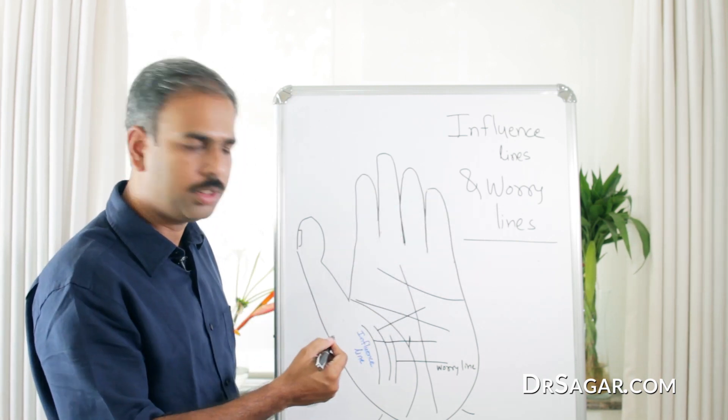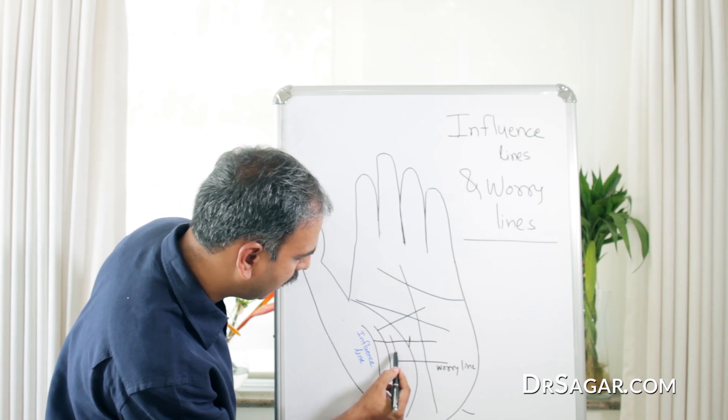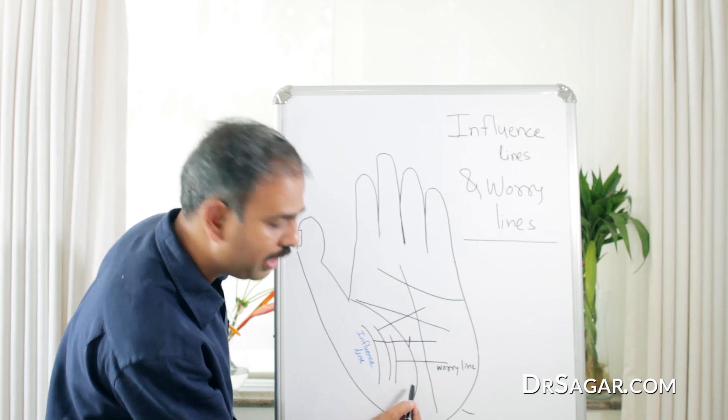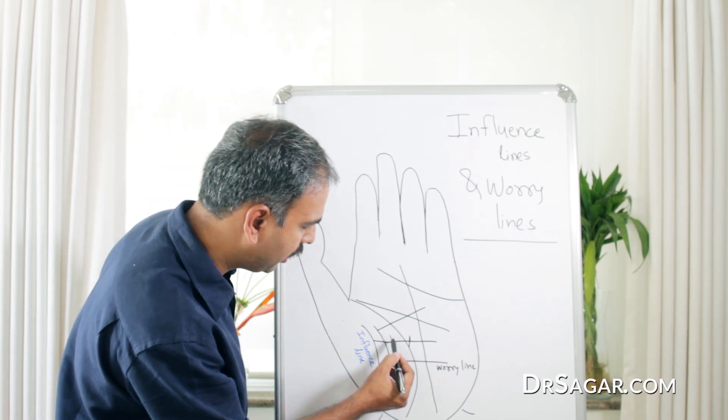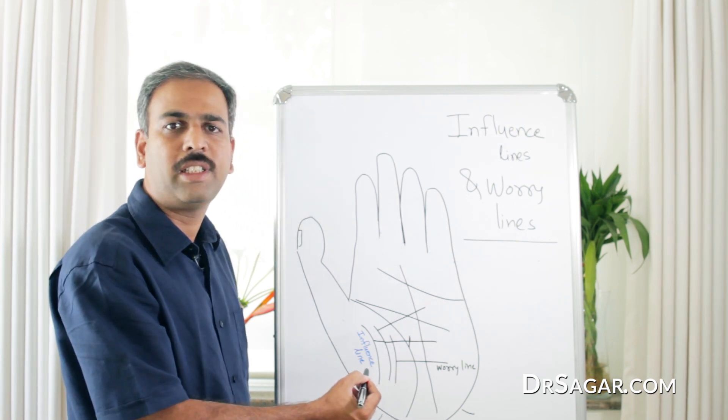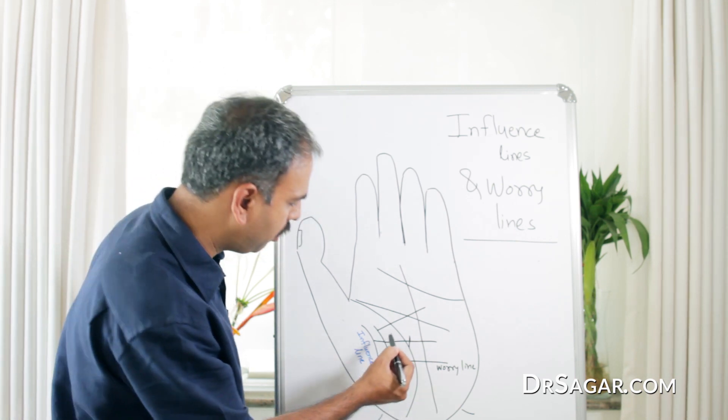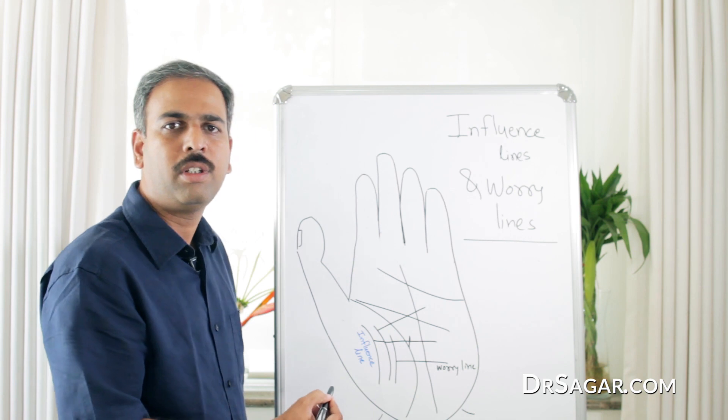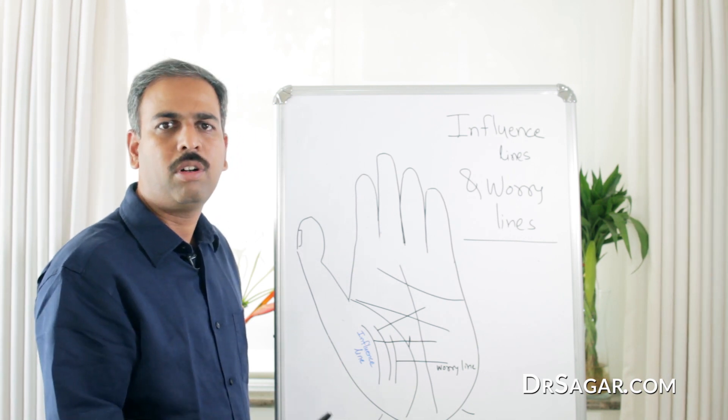Now I will show you. Say, this line is very near to the Life Line, so it is the most influence exerted on that person. We can say this is the line of mother or his wife.